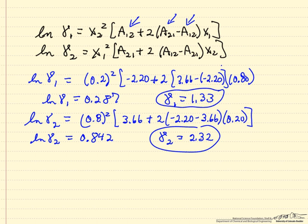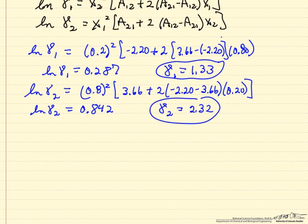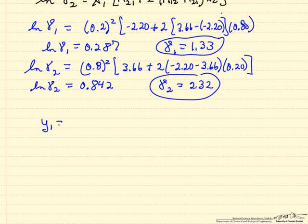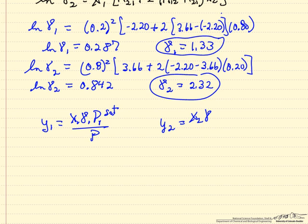Then I can use these to go back to the modified Raoult's law. In this case, y1, which is what we're trying to solve for at the new condition, and the modified Raoult's law is this, and y2 is the corresponding equation for component 2.